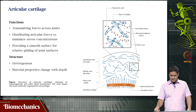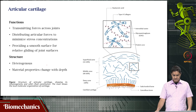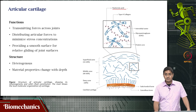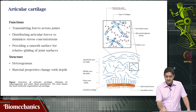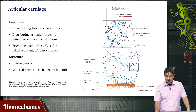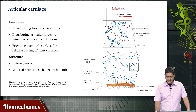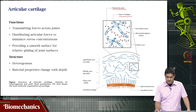It turns out that the structure of articular cartilage is quite heterogeneous. It is composed of hyaluronic acid and type 2 collagen, along with water, proteoglycans and GAG. There is no simple straightforward structure — it is quite heterogeneous. And as the depth of the cartilage changes, the structure also changes.